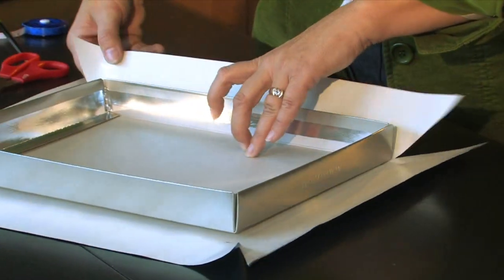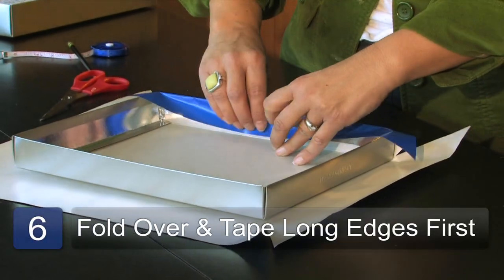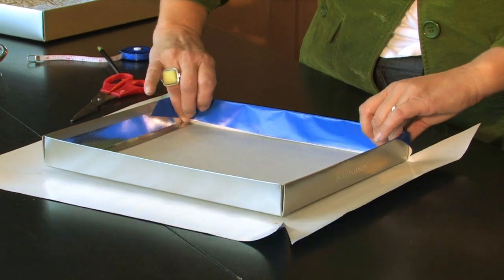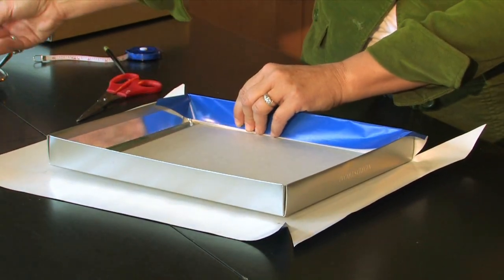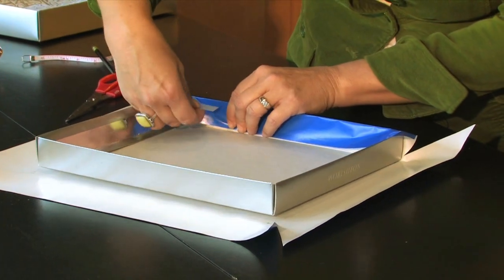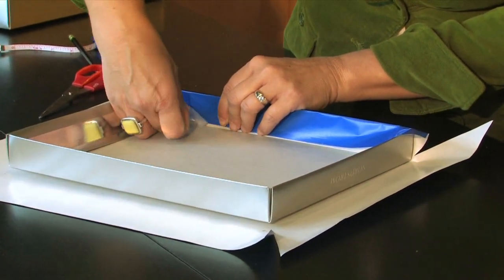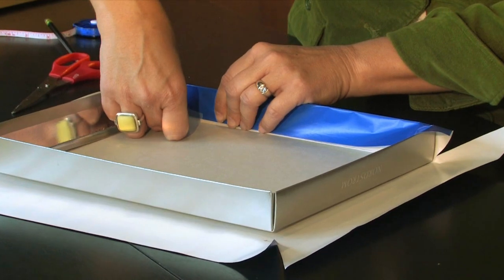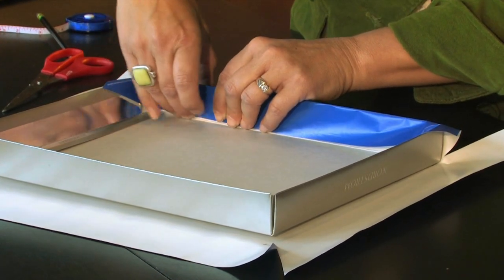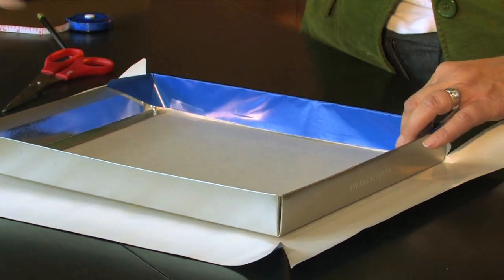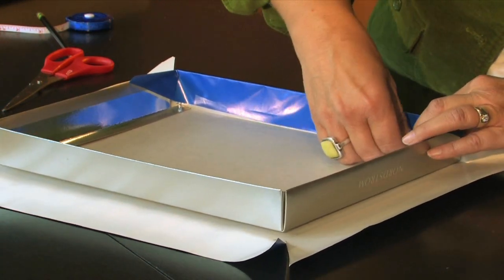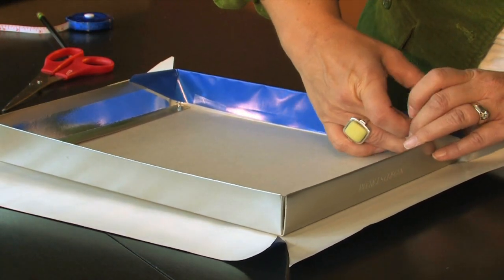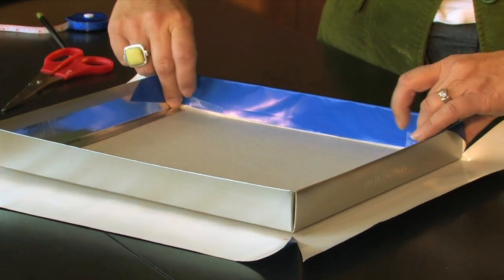So now we just get into the wrapping. Take your long ends first. Fold them over. Tape them. Tape them. Tuck those down in.